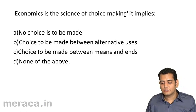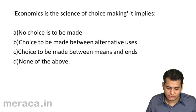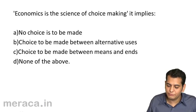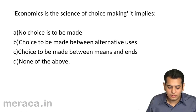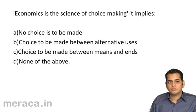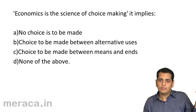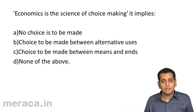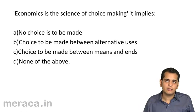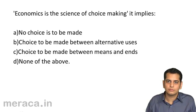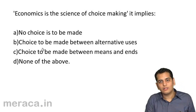Economics is a science of choice making. This implies: A. No choices to be made, B. Choices to be made between alternative uses, C. Choices to be made between needs and ends, D. None of the above. Why does the problem of choice making arise? It arises because the uses of scarce resources are many — multiple uses of those scarce resources. So the answer is choices to be made between alternative uses.